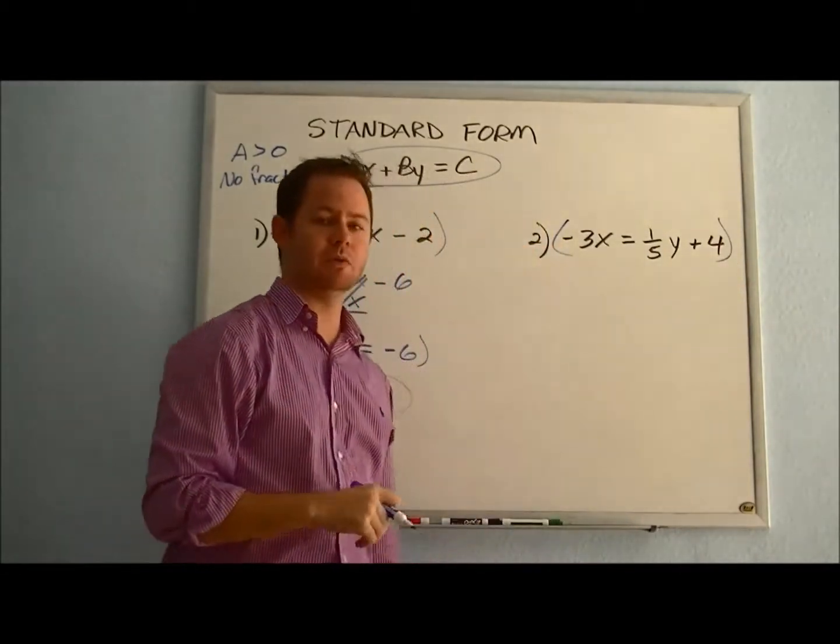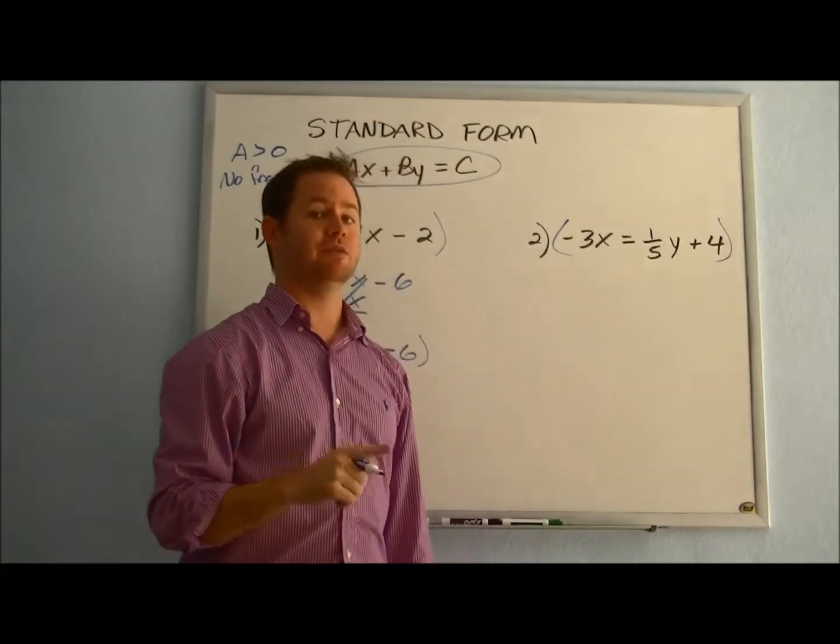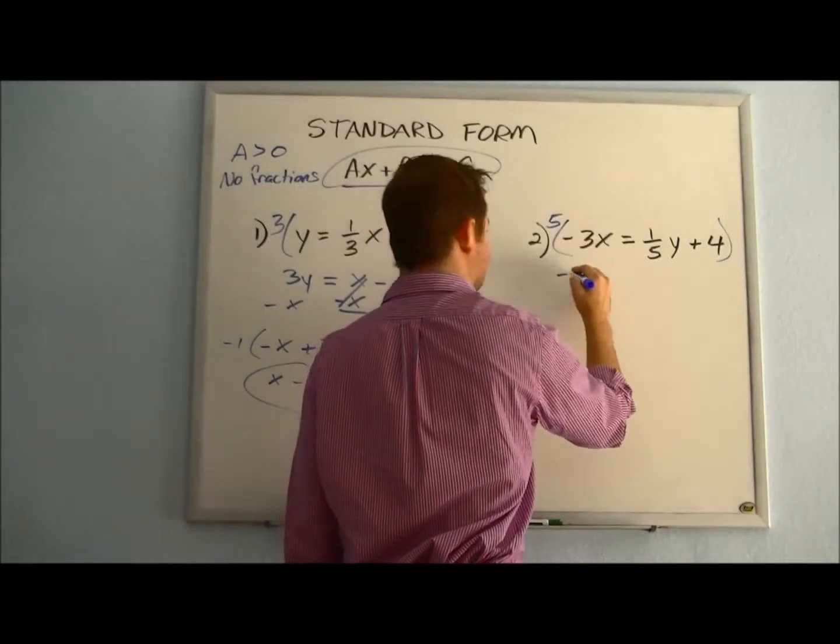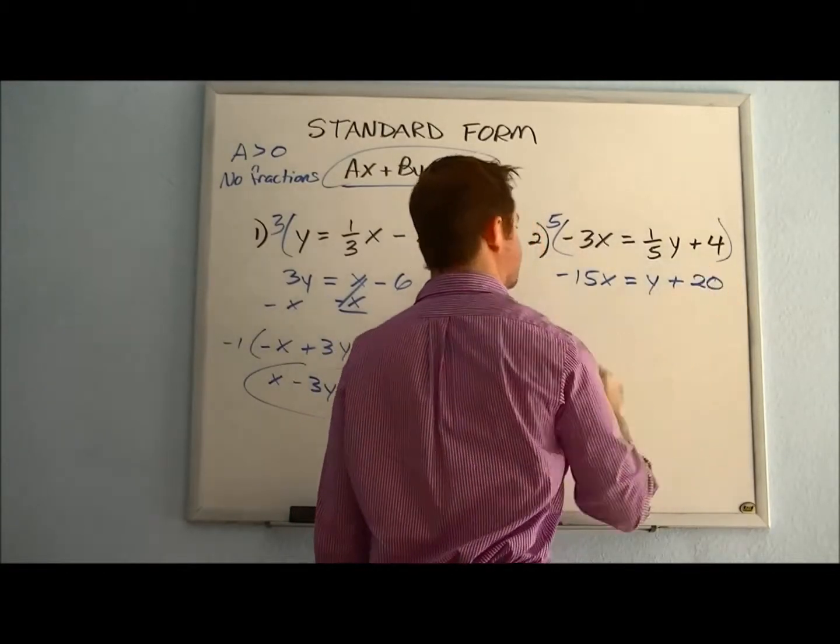And so in this case, what do we need to multiply our entire equation by to get rid of this denominator? If you said five, you're correct. So we need to multiply everything by five, which would leave us with -15x = y + 20.